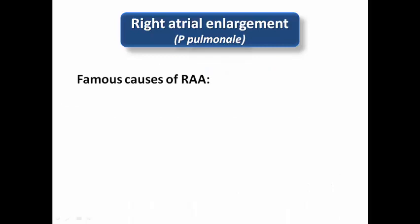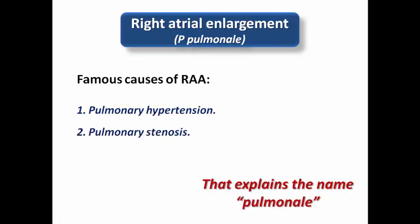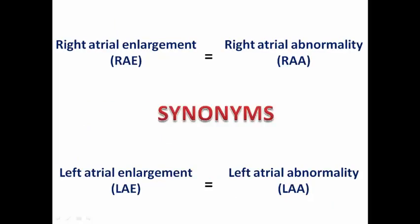Famous causes of right atrial enlargement include pulmonary hypertension and pulmonary stenosis — explaining the name P pulmonale — as well as tricuspid stenosis. All these causes increase right atrial pressure and lead to right atrial enlargement. It is worth noting that right and left atrial enlargement are also called right atrial abnormality (RAA) and left atrial abnormality (LAA) — or abbreviated RAE/LAE — these are synonymous terms.